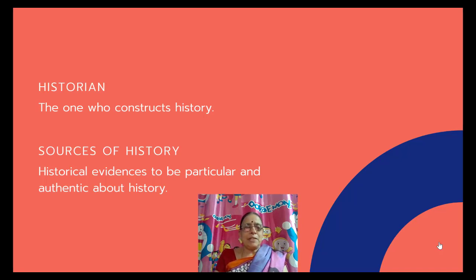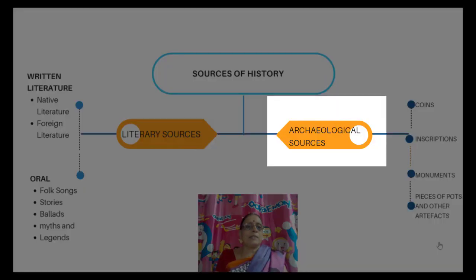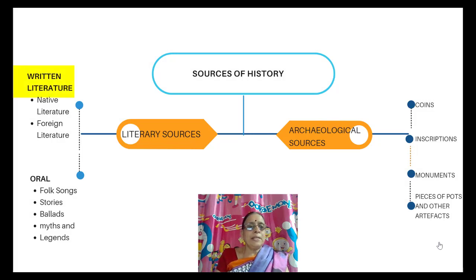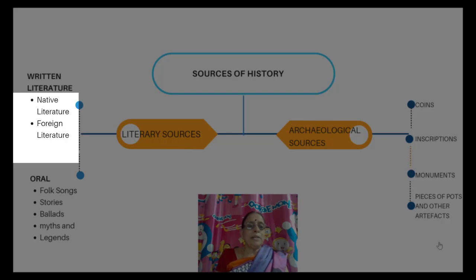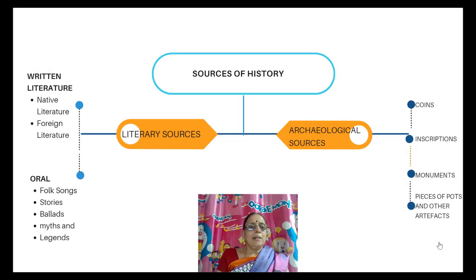Now let us study about the sources of history. Exact evidences are needed for the systematic and scientific method of studying history. Sources of history can be divided into literary sources and archaeological sources. Literary sources are further divided into written literature and oral literature. Written literature includes native literature — books written by native people — and foreign literature, which includes records by historians of other countries. Oral literature includes folk stories, ballads, myths and legends, mostly associated with illiterate or rural people.